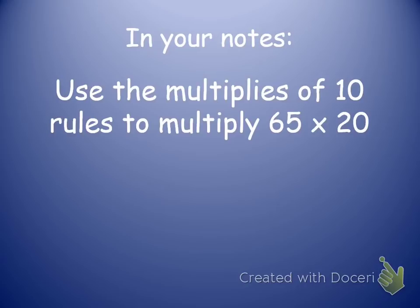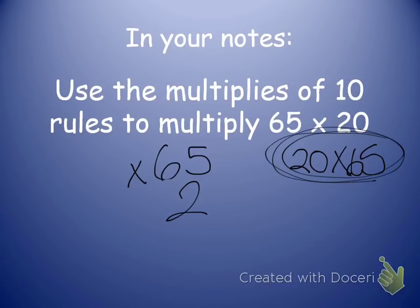In your notes, we're going to try this next one. 65 times 20. So this is the problem I'm starting with. But I go ahead and look at that and I could solve it using expanded algorithm. But I want to make my life easier and I'm just going to put 2. But I'm going to write 65 times 20 over here to make sure I remember my original problem.